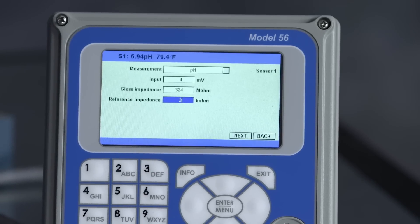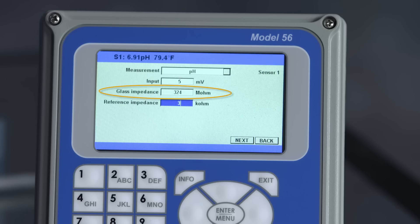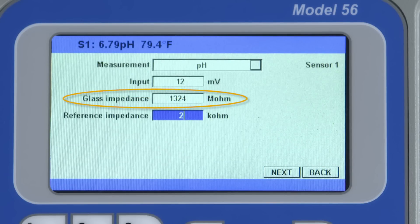Many of our pH sensors have a nominal glass impedance between 50 to 1000 megaohms, although the exact value isn't critical. A large upward step change would indicate a coated glass bulb or dry sensor.